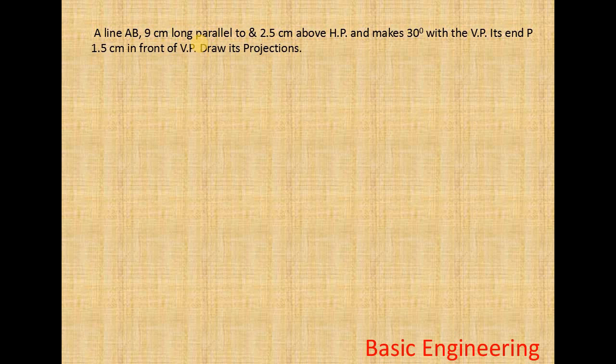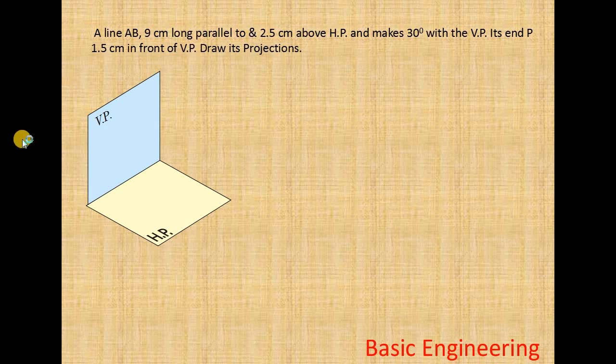First we see how is the line. You assume this is the horizontal plane and this is the vertical plane. And this is the XY line. The line is inclined to VP and parallel to HP. This is the line position. The line AB is parallel to the horizontal plane and inclined to VP by 30 degrees.